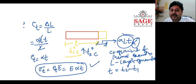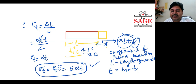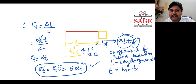So sigma_T equals E·alpha·T, where E is Young's modulus of elasticity, alpha is the coefficient of thermal expansion or contraction in per degree Celsius or per Kelvin, and T is the change in temperature — that is final temperature minus initial temperature. This is the temperature stress in the member. In the next lecture, we will discuss temperature stress in a compound member. Thank you.